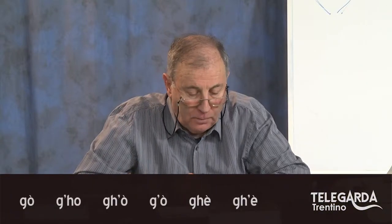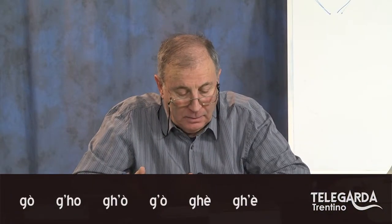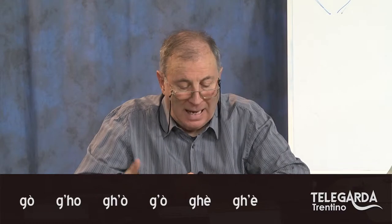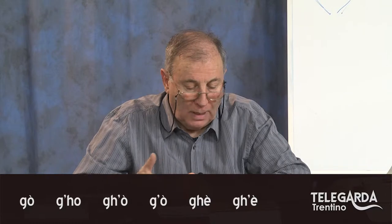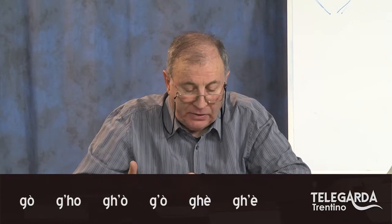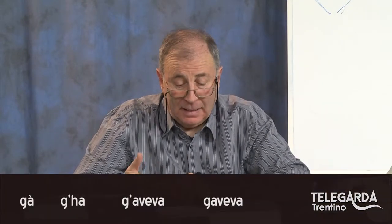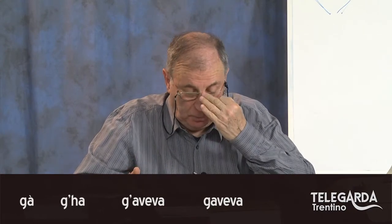Partiamo intanto dalle forme del verbo avere e dalle forme del verbo essere. Il famoso 'go', 'ghe': vedete che a volte il 'go' presenta l'h, a volte la o ha l'accento. A volte col 'go' con l'h l'accento non c'è, e la stessa cosa vale per 'ghe'. A volte c'è l'apostrofo, a volte non c'è. E così 'ga', 'gaveva', 'gaveva' addirittura senza h, senza apostrofo. La stessa cosa vale per le forme 'la' con o senza h.